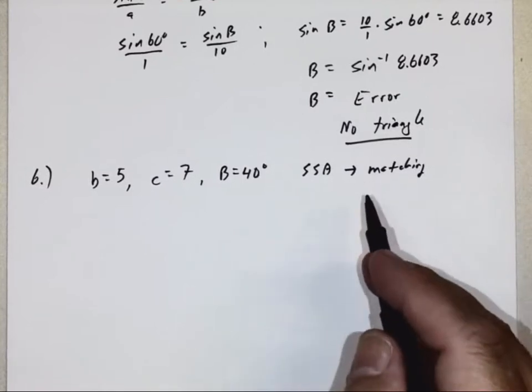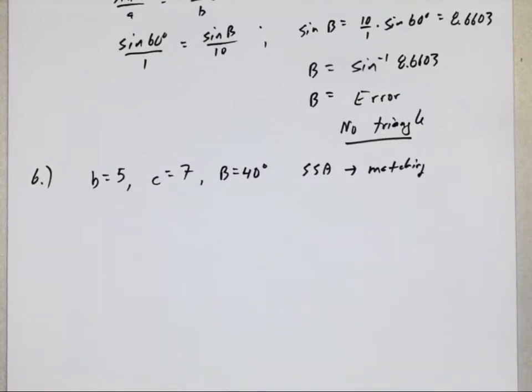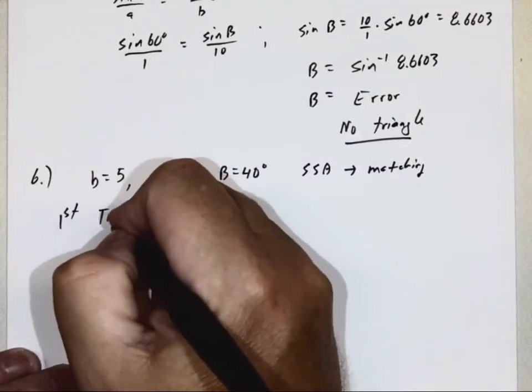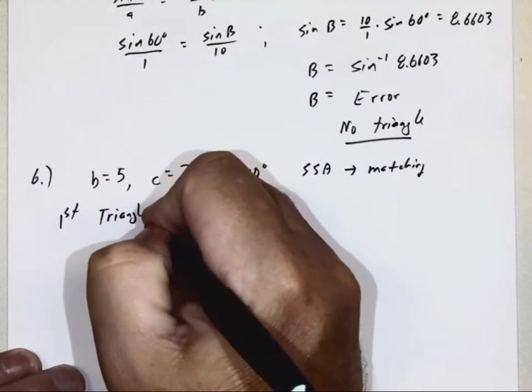I'm not going to write this again, but you know what this means? It could have zero angles, one angle, or two angles. I mean zero triangles, one triangle, or two triangles.